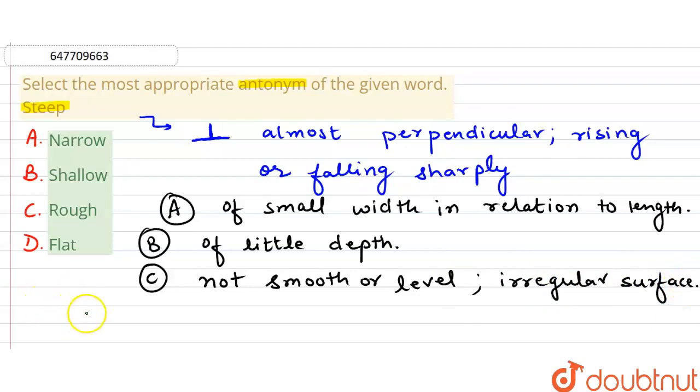Last option, that is D, the fourth, flat. What does flat mean? Flat means having a leveled surface. Horizontal, we can say. Without raised areas.